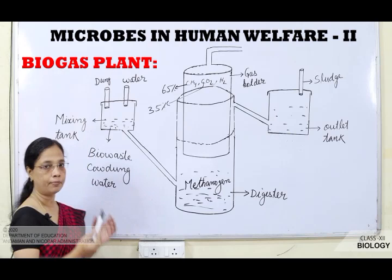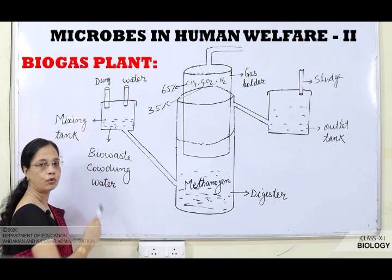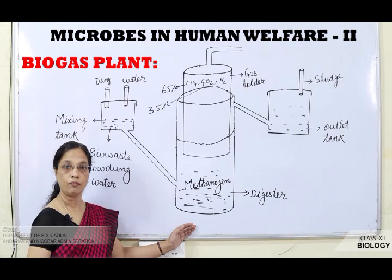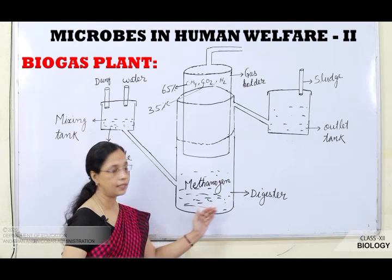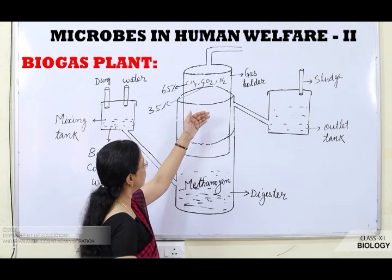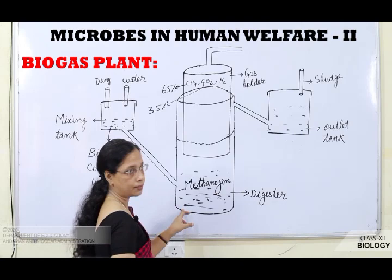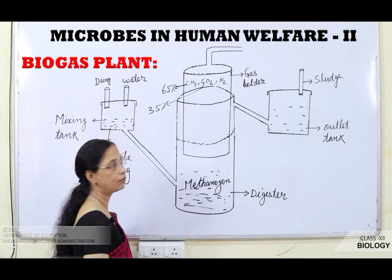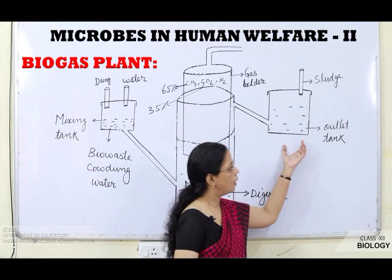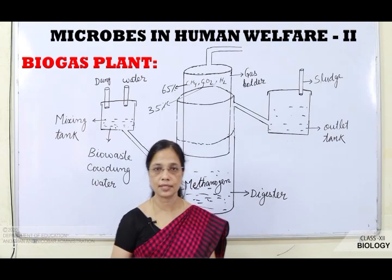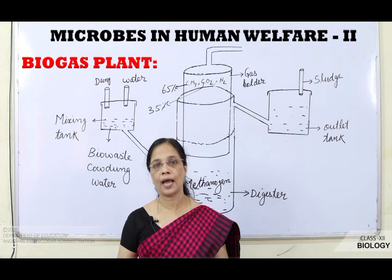To summarize the working of the biogas plant: cow dung, bio-waste, and water are mixed in the mixing tank and passed into the digester tank where methanogenic bacteria digest the bio-waste and produce a mixture of gases collected in the gas holder above the digester. Gas is supplied to nearby houses. The used sludge is collected in the outlet tank and used to increase soil fertility.